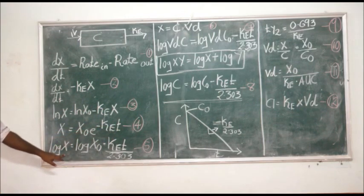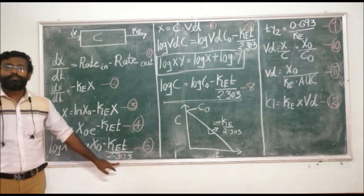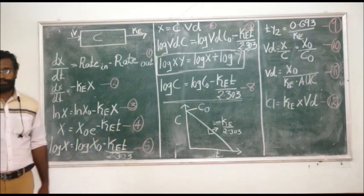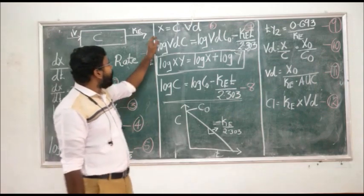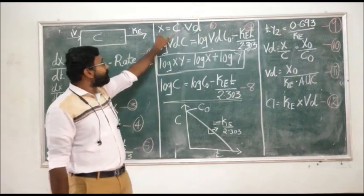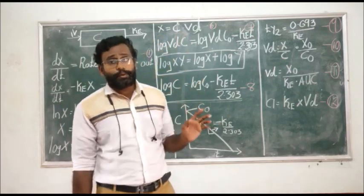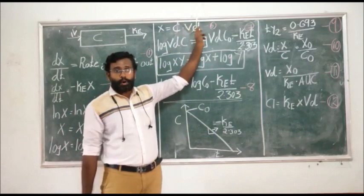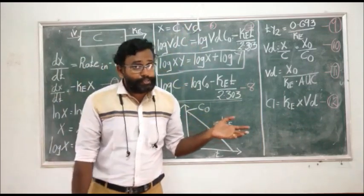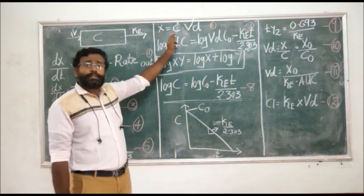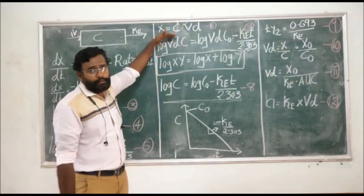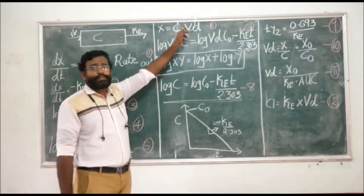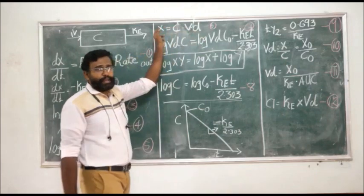In log form: log X = log X0 - (Ke·t)/2.303. Now, X is the amount of drug, and in pharmacokinetics, the amount of drug equals concentration multiplied by volume of distribution: X = C·Vd. Here C is the plasma drug concentration and Vd (capital V, small d) is the volume of distribution. So X = C·Vd. Now substitute X = C·Vd into the equation: log(C·Vd) = log(C0·Vd) - (Ke·t)/2.303. C is the plasma concentration at time t, and C0 is the initial concentration.